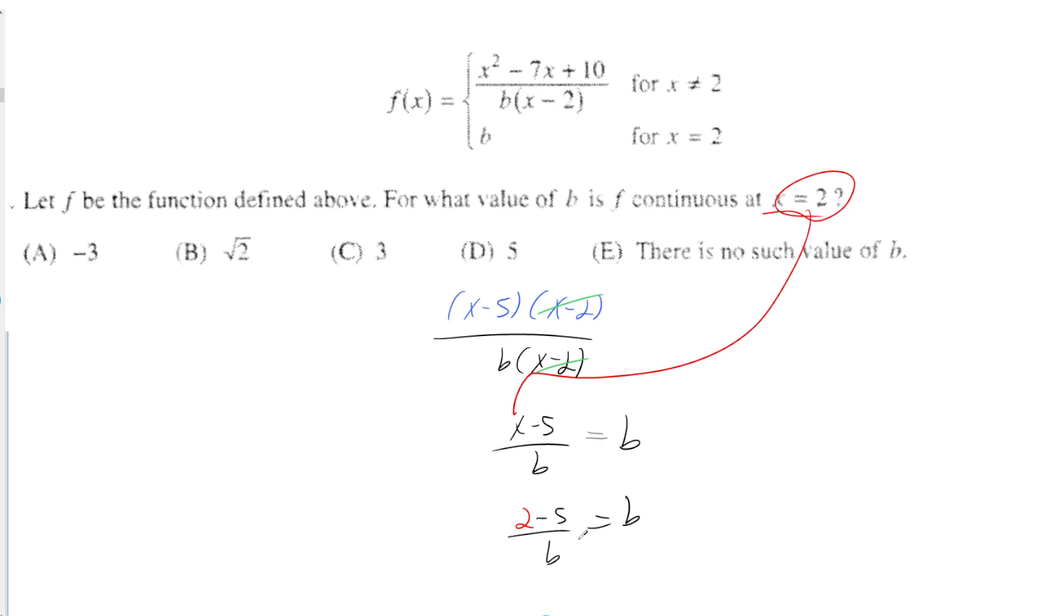Anyway, now all we have to do is solve this. So multiply both sides by b, and also subtract. You'll get negative 3 equals b squared.